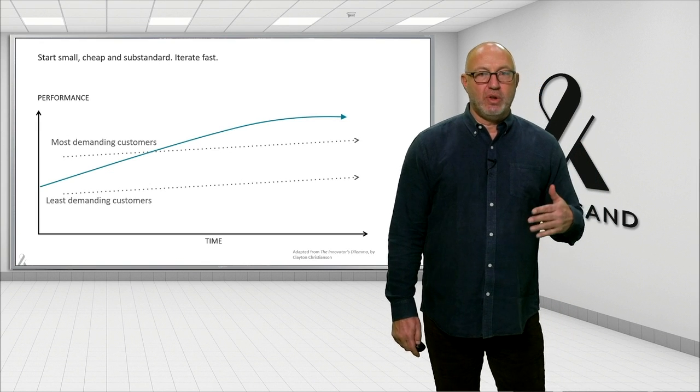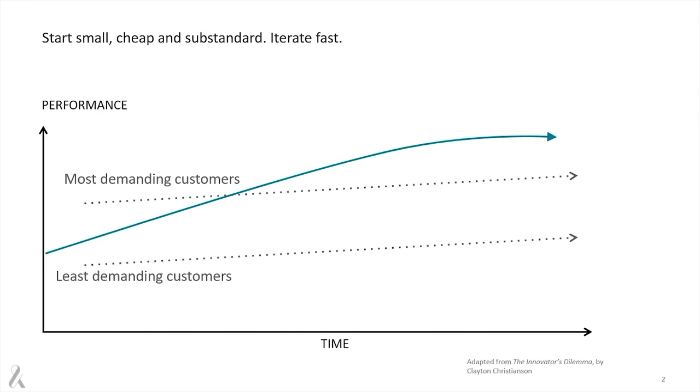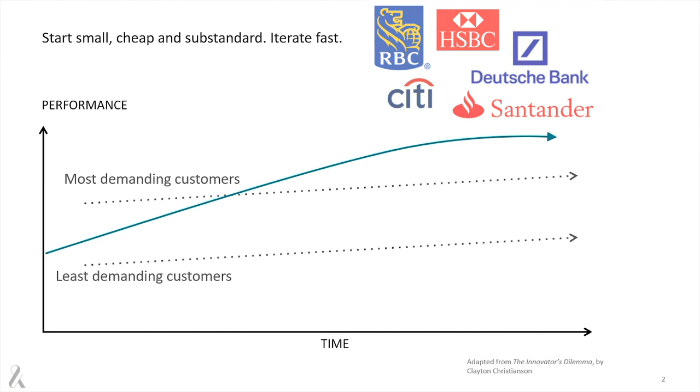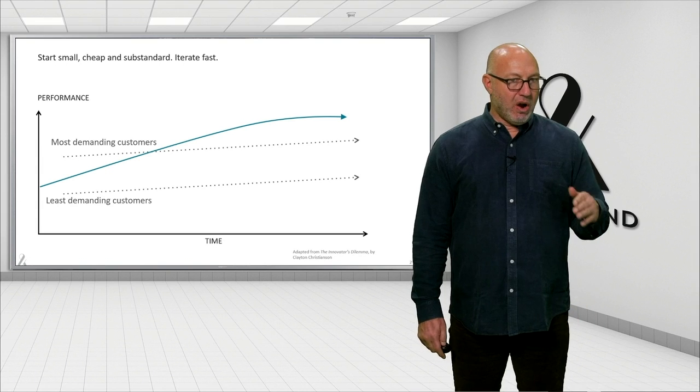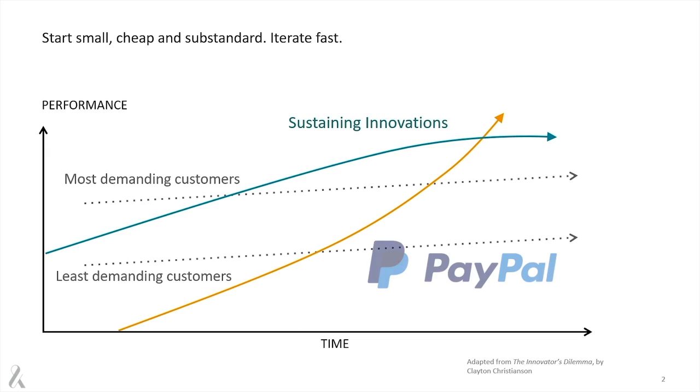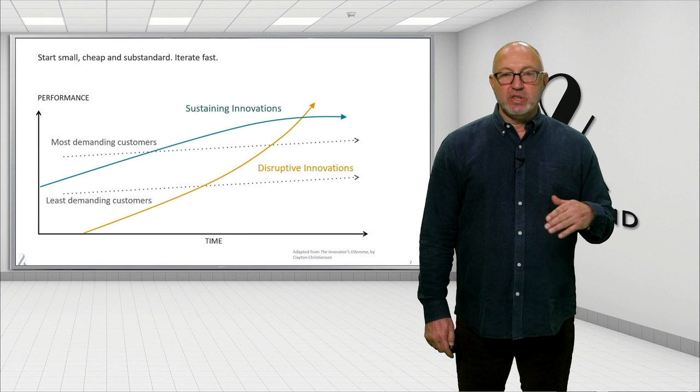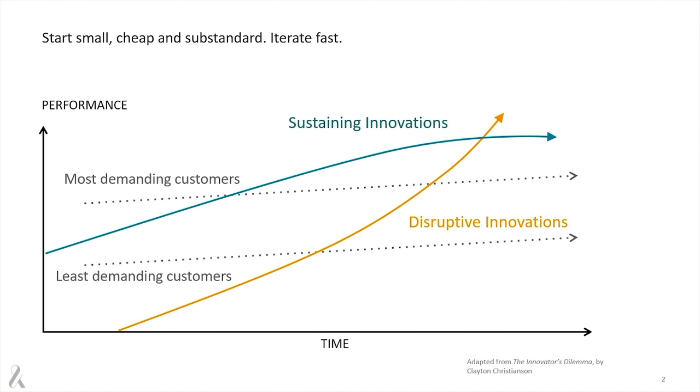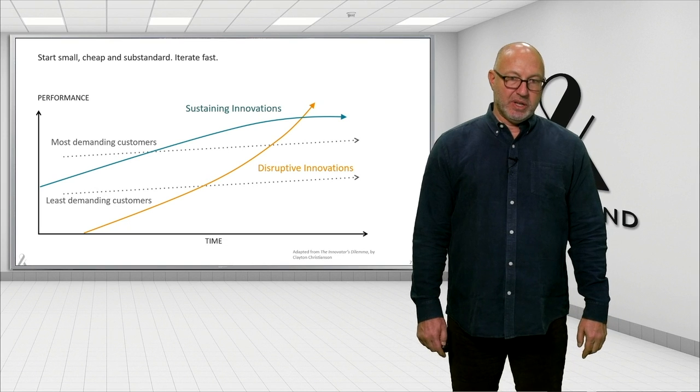For example, traditional offerings follow a curve of increasing value that eventually goes flat over time. These are disrupted by innovators who come in from the bottom. They come in cheaper, faster, and below the demands of the most valuable customers. This allows them to iterate faster, grow quickly, and eventually even supersede the incumbents.